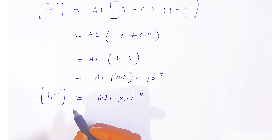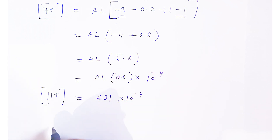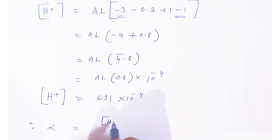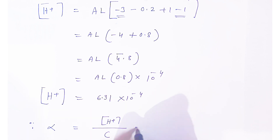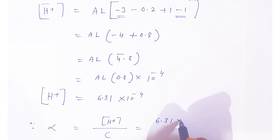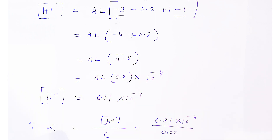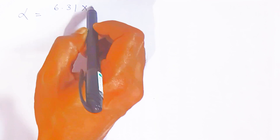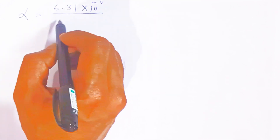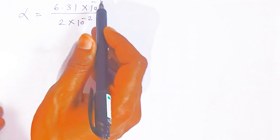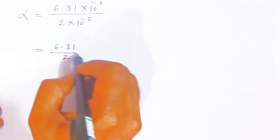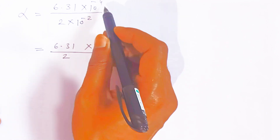Now we calculate the degree of dissociation. Alpha = [H⁺] / C = (6.31 × 10⁻⁴) / 0.02. Since 0.02 = 2 × 10⁻², dividing gives 6.31/2 × 10⁻⁴⁺² = 3.15 × 10⁻². This means alpha = 0.0315.